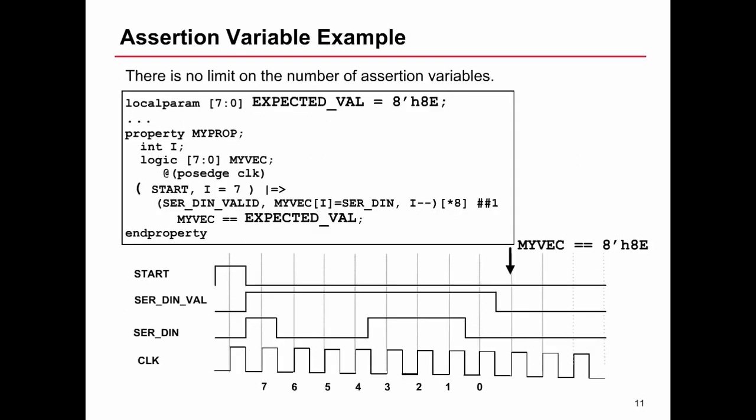The previous slide showed an example of assertion variables, but this one is more practical and realistic. As we said, there is no limit on the number of assertion variables. In this example we've got two - we could have had three or more if needed. The property my_prop has an integer called i and an 8-bit logic signal called myvec.